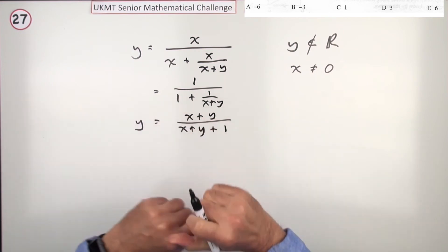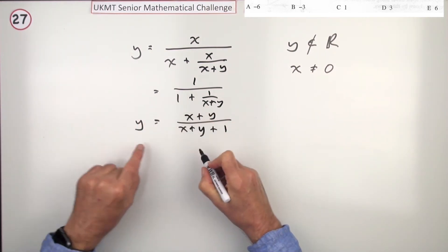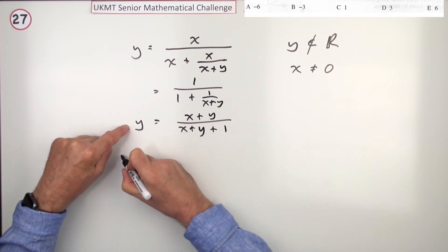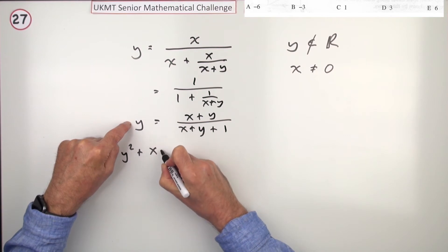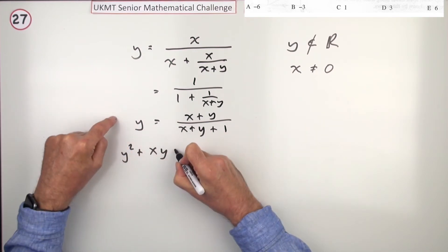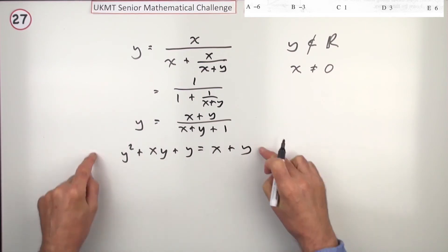Then I'll just take that across and multiply. Or, you can say multiply both sides by that. Same effect. So, that will give me, I'll put this one first, y squared plus xy plus y equals x plus y. You can see what's happening. You're narrowing it down to a little quadratic,